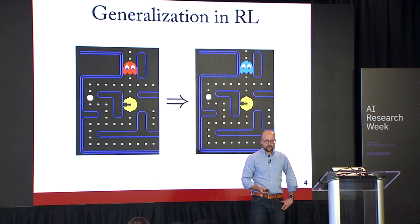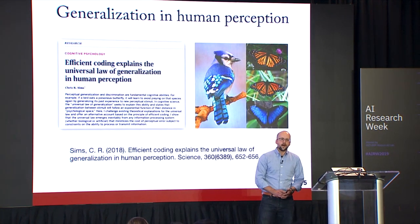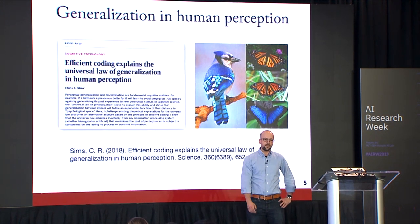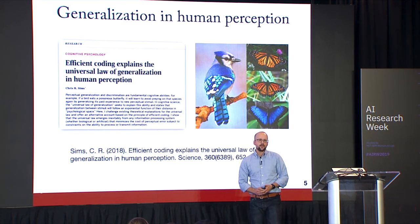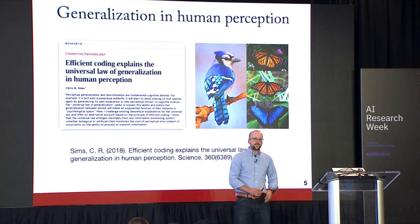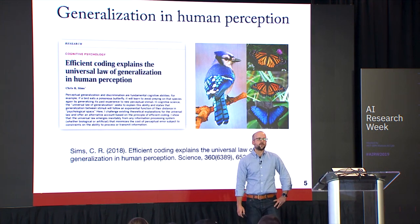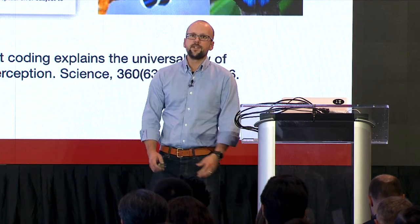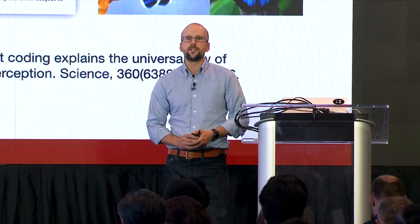Reinforcement learning can tell you how to learn an optimal policy but tells you nothing about how to generalize to new situations. In practice, the field gets around that by using deep neural networks to represent policies — sometimes they generalize and sometimes they don't. I'm interested in what we can learn from generalization in human intelligence. For example, a blue jay learns that eating a particular species of butterfly is toxic — what can it infer about other butterfly species it's never encountered?